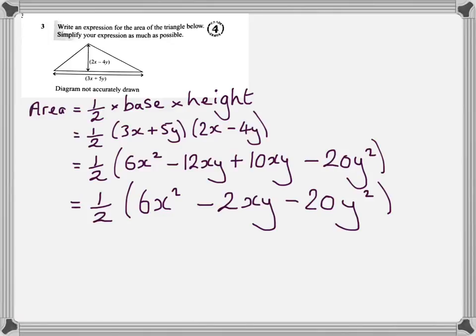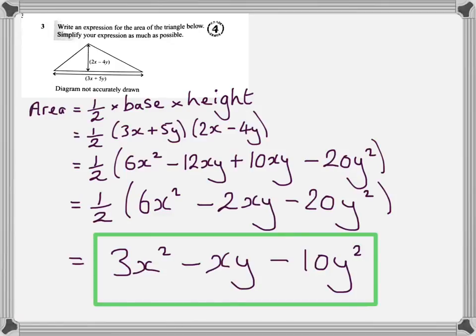And then the last job is to multiply it throughout by a half. And in so doing, I'll get 3x squared minus xy minus 10y squared. That's the end of the question.